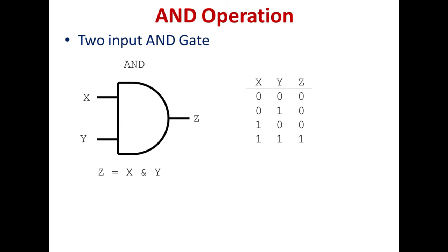From the truth table: if inputs A and B are 0, 0, the output is 0. If the inputs are 0, 1, the output is 0. If the input is 1, 0, the output is 0. And for the input 1, 1, the output will be 1.